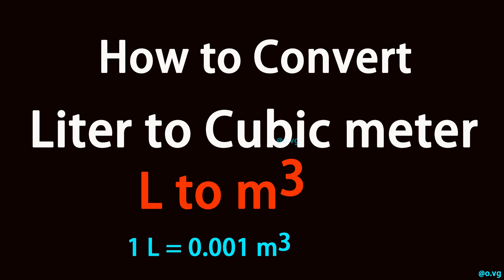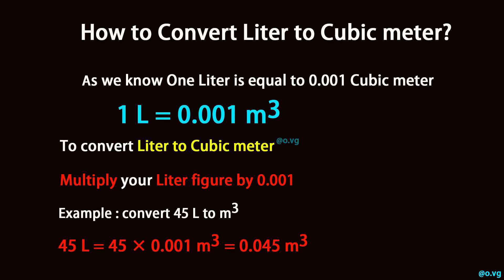How to convert liter to cubic meter. As we know, 1 liter is equal to 0.001 cubic meters. To convert liter to cubic meter, multiply your liter figure by 0.001.